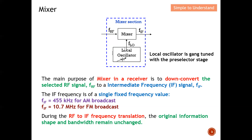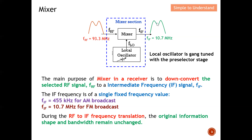In Singapore we also have a Chinese station — YES 933 — which broadcasts at 93.3 MHz. If I want to listen to YES 933, with the help of FLO and the pre-selector the signal centered at 93.3 MHz arrives at FRF, and the mixer again down-converts the high frequency to a lower frequency. Since FIF is a fixed value of 10.7 MHz, I can listen to YES 933.